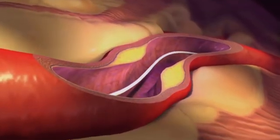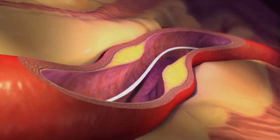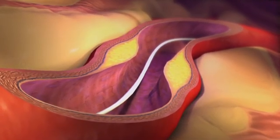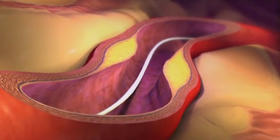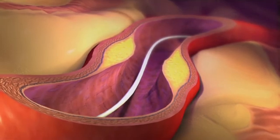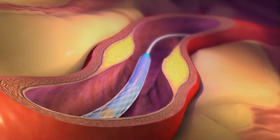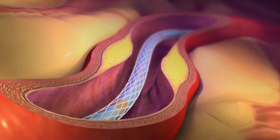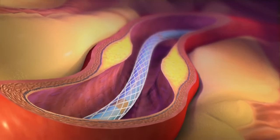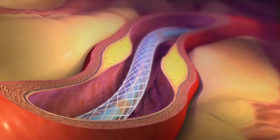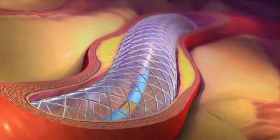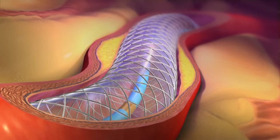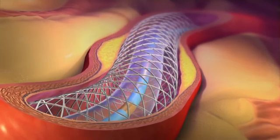Often during balloon angioplasty, a stent is inserted at the site of the blockage to help the artery from reclosing. A stent is a wire mesh tube placed around the deflated balloon catheter. When the balloon is inflated at the site of the blockage, the stent expands and adheres to the artery wall.